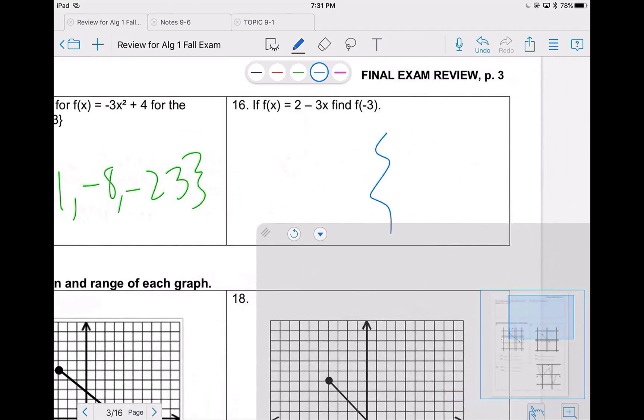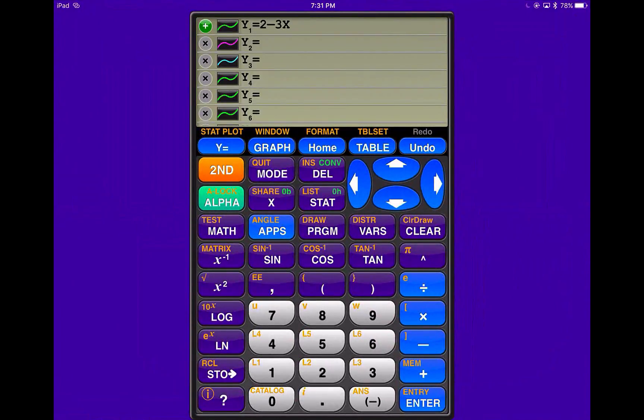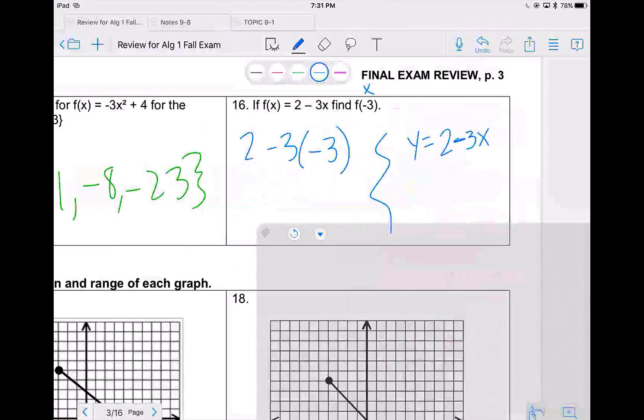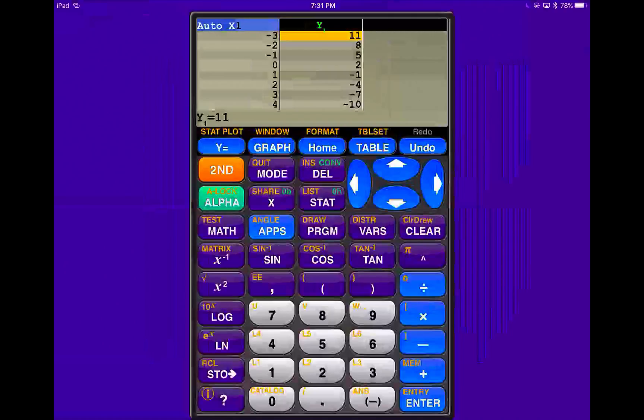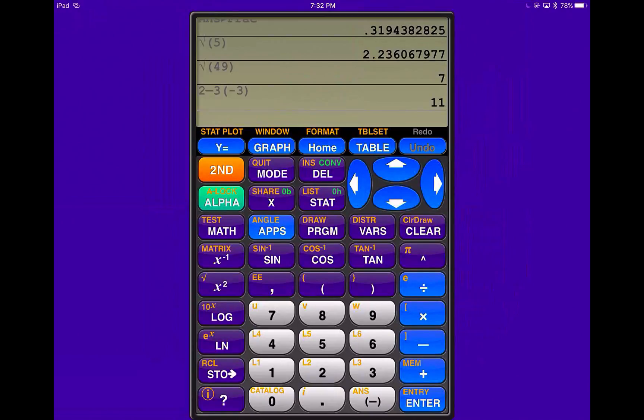For 16, there's two different ways to do it. You can plug this in by hand. Remember that whatever they give you inside the parentheses is an x value. So you can write it by hand and then plug it into the calculator. Or you can put 2 minus 3x in y equals and go look at the table like we just did. No matter what way you choose, you should get the same thing. So in my table, when x is negative 3, y is 11. Or if I type this into my calculator, 2 minus 3 times negative 3, I get 11. So either way, whether you do it by hand or in the calculator, you will get 11.